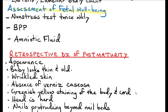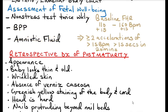Assessment of fetal well-being includes doing a non-stress test done twice weekly, a biophysical profile, and estimation of the amniotic fluid. Other tests include Doppler ultrasound velocimetry and a contraction stress test. A non-stress test is the continuous electronic monitoring of the fetal heart rate as well as recording of fetal movements on a cardiotachograph — the CTG. The baseline fetal heart rate should be about 110 to 160 beats per minute. A reassuring non-stress test is when you find two or more accelerations of more than 15 beats per minute lasting 15 seconds in a 20-minute observation.